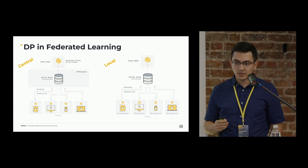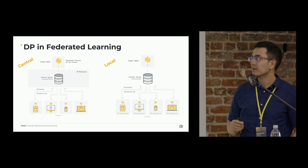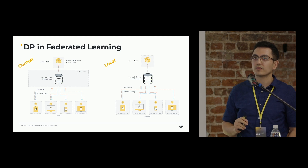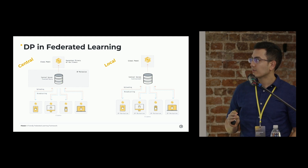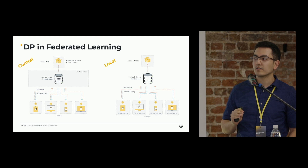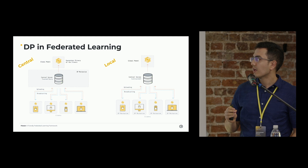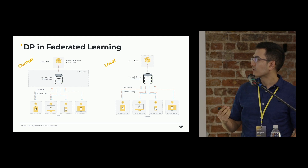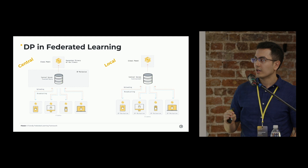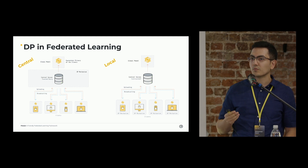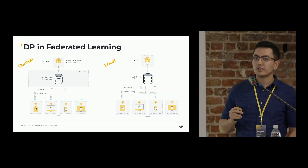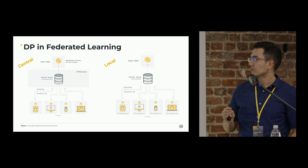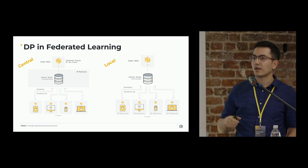For differential privacy in federated learning, we focus on two variants: central and local. For central differential privacy, we assume the server is responsible to perform the DP mechanism — it does that by clipping the updates from the clients and then adding some amount of noise to the aggregated model. For local differential privacy, each client is responsible to perform the DP mechanism. The reason we might use local differential privacy is that it doesn't trust the server.